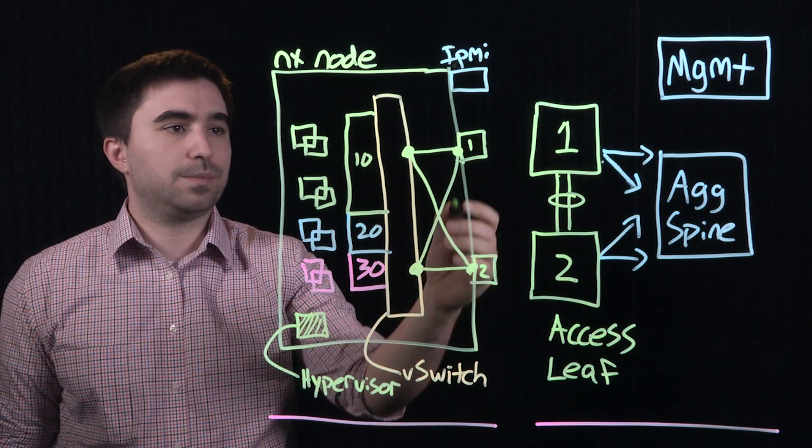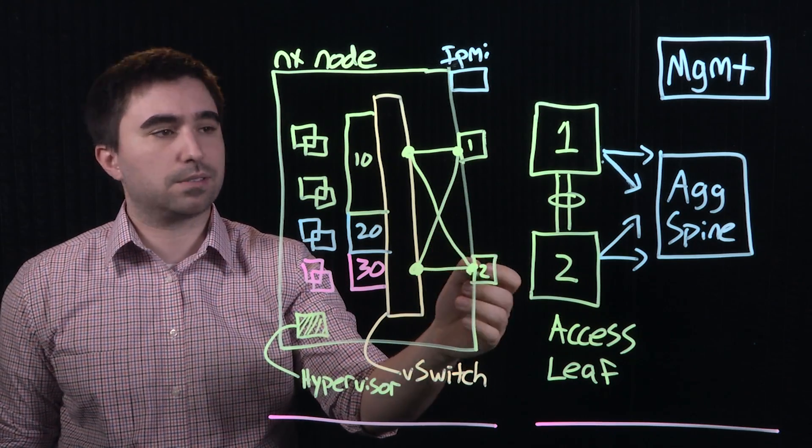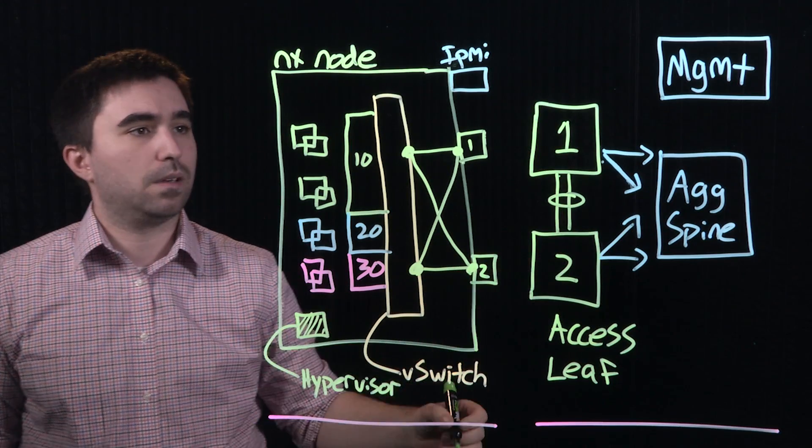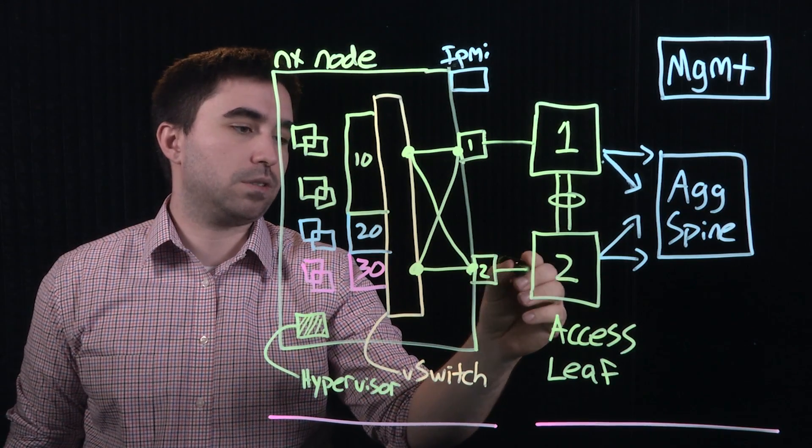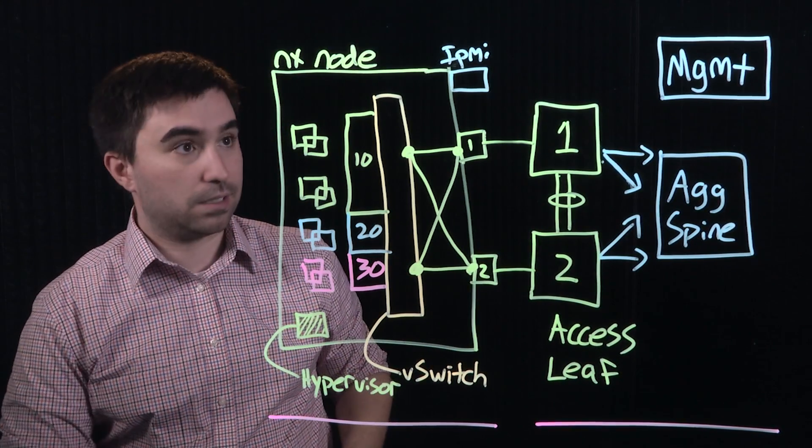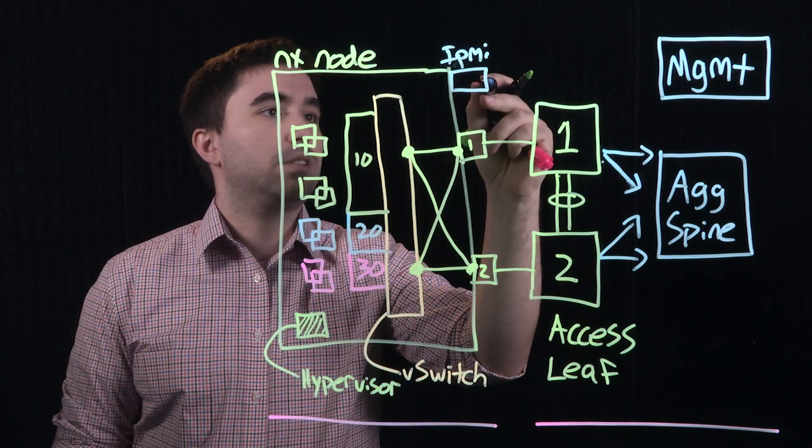As you recall from the previous video, these are generally 10 gig adapters and these are generally 10 gig switches. Network adapter 1 goes to network switch 1, network adapter 2 goes to network switch 2, and the IPMI port goes to the management switch.